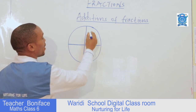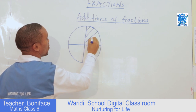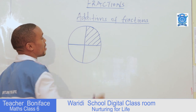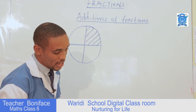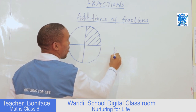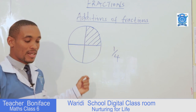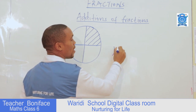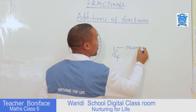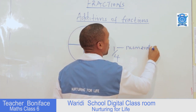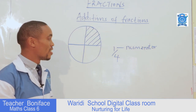So I'll shade one part. I've shaded one out of the four parts. One out of the four parts is known as a quarter. In our fractions, as we have already learned, we know that the upper number is known as the numerator. Repeat after me — numerator. And the lower number is known as the denominator.